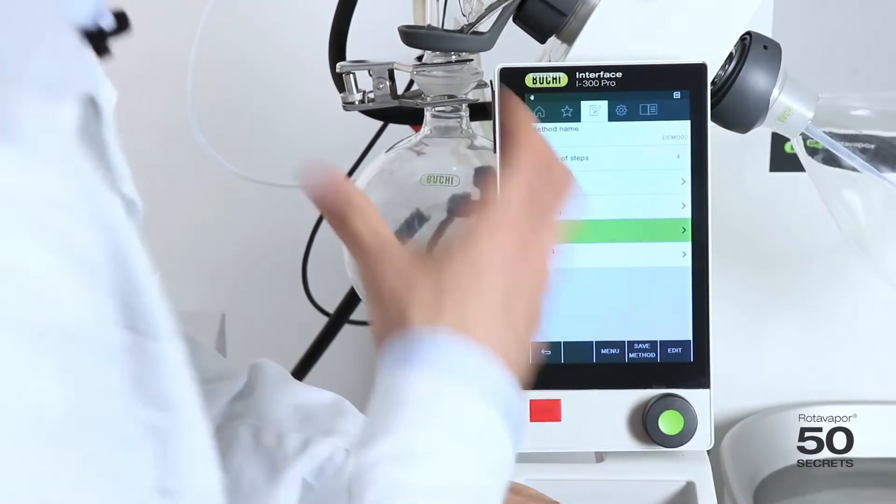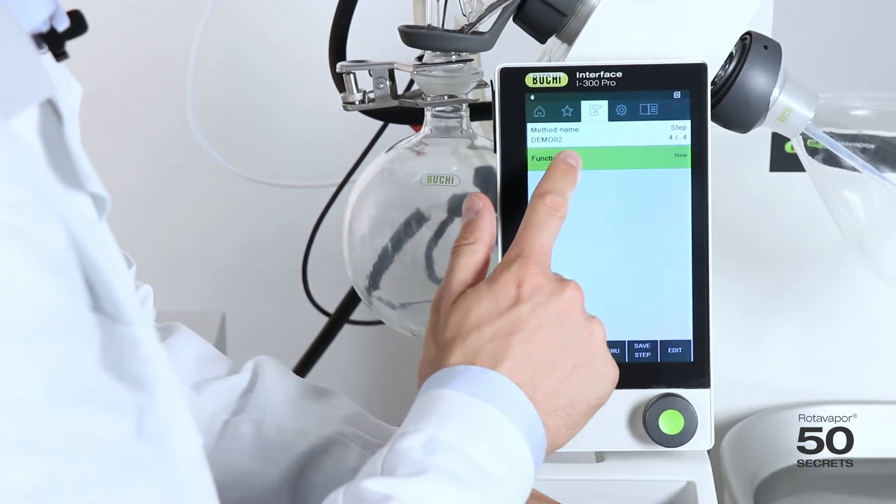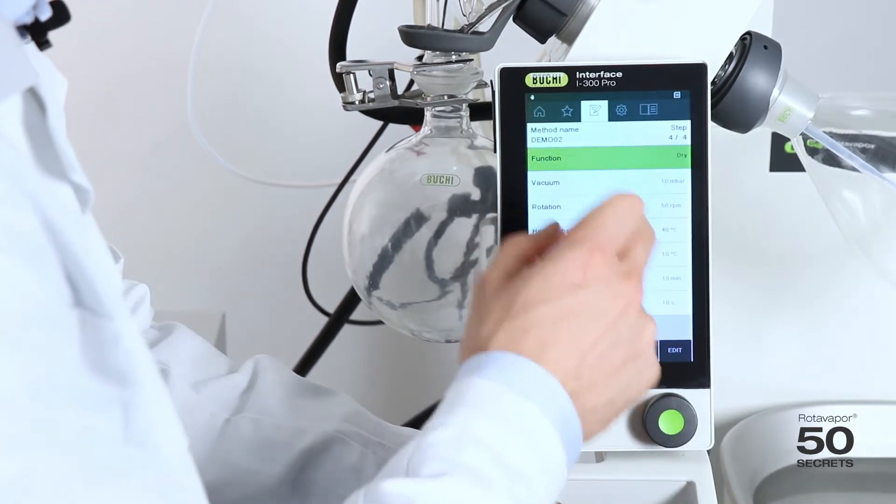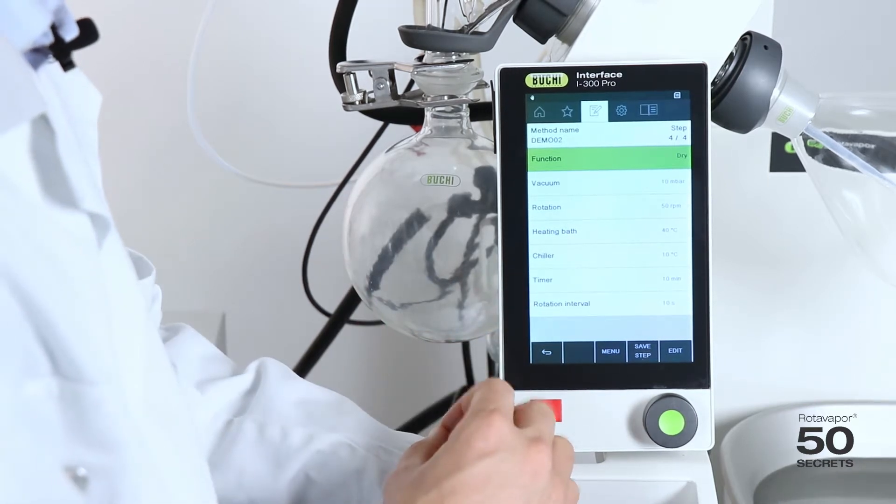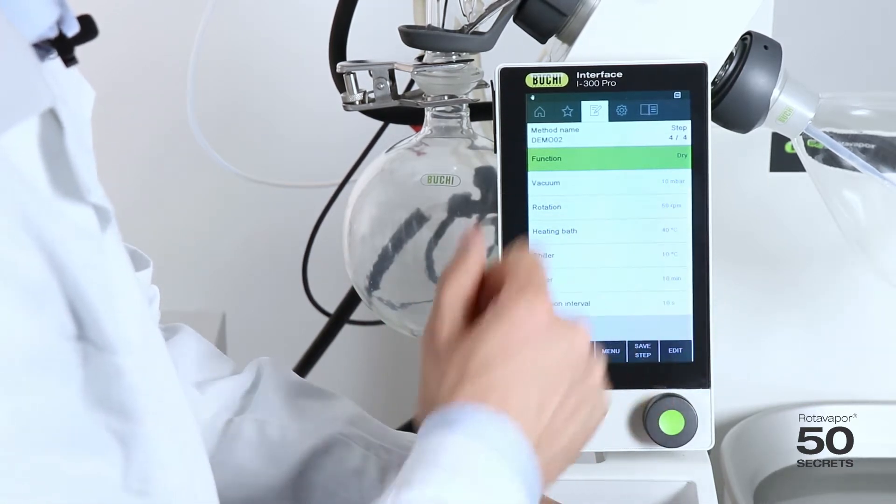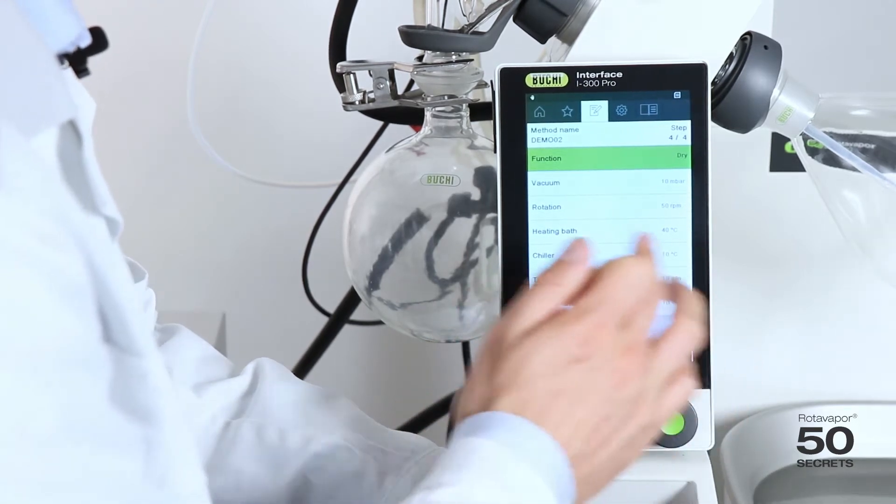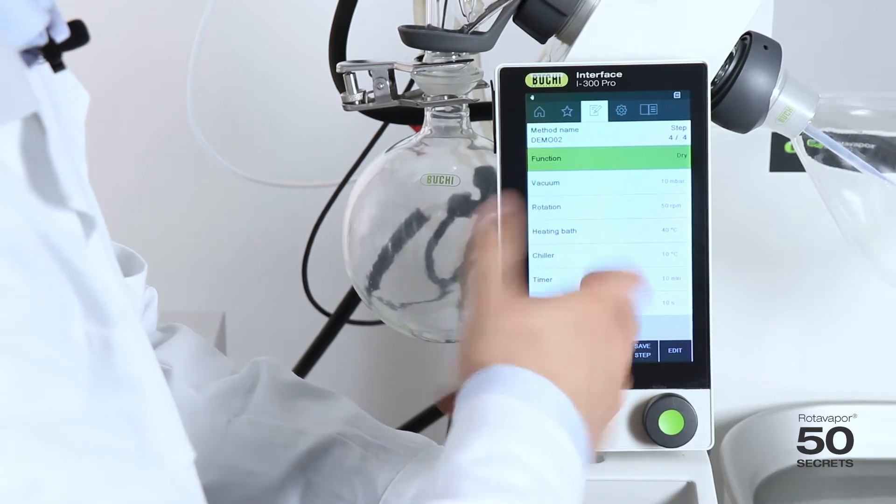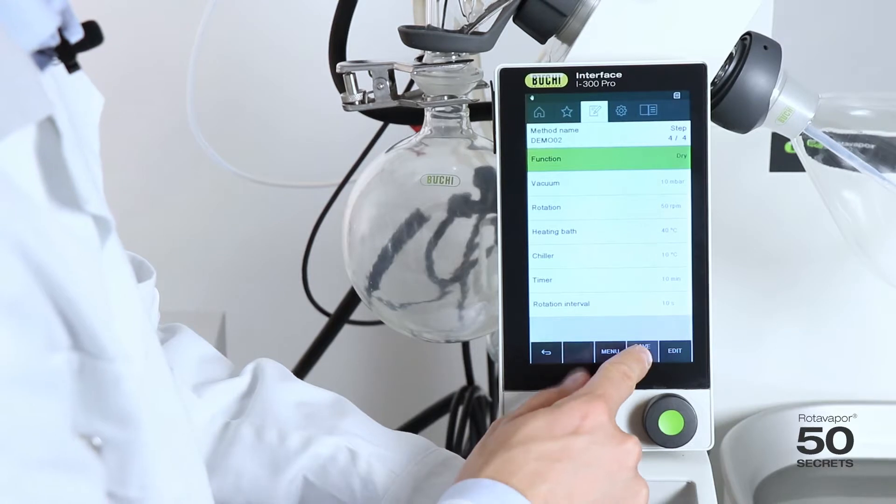And now we want to dry the sample. That's the last step. We go in. We select the function dry. Let's say 10 millibars is okay. We could even go lower just so that the pump is running full speed. Rotation 50 RPM seems fine. 40 degrees heating bath. And we want to do this for 10 minutes. And the rotation interval 10 seconds into one direction. 10 seconds into the other direction. Let's save that.